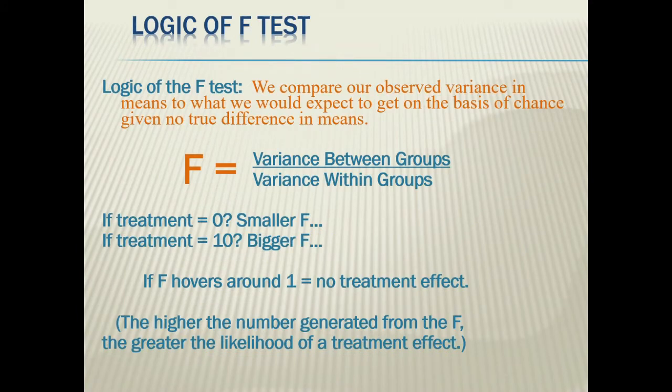The logic of the F-test is that we're comparing our observed variance in the means to what we would expect to get on the basis of chance if there were no true difference. So there are going to be variances when you have multiple responses or results. We're looking to see if our variances are what we would expect to see with chance or if they are beyond that. So for our F, we're looking at the variance between groups divided by the variance within groups. If the treatment is negligible or if the treatment is not effective, we're going to have a smaller F. If the treatment is a large effect, we're going to have a bigger F. So if the F statistic is hovering around one, there's really no treatment effect. The higher the number generated from the F, the greater the likelihood that there will be a treatment effect.